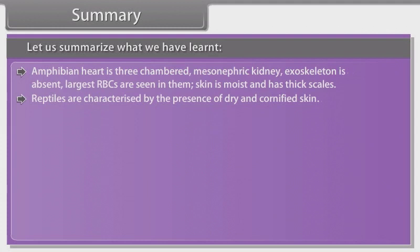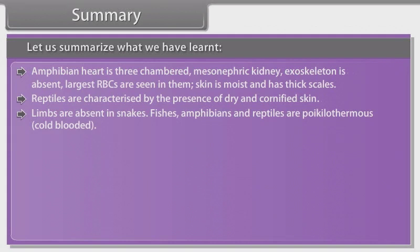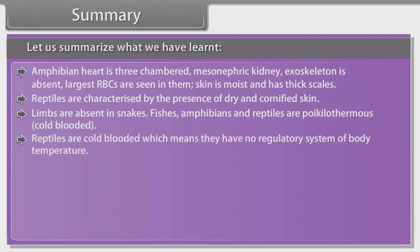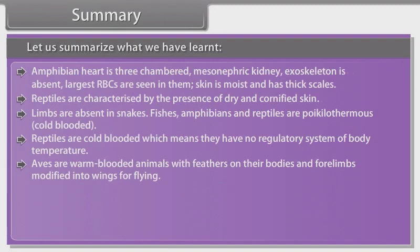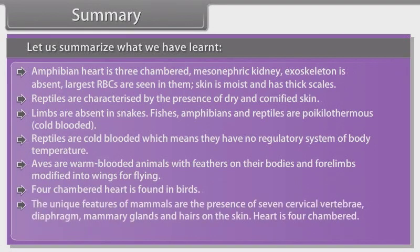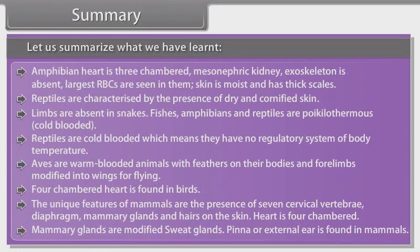Reptiles are characterized by the presence of dry and cornified skin. Limbs are absent in snakes. Fishes, amphibians and reptiles are poikilothermous, i.e., cold-blooded, meaning they have no regulatory system of body temperature. Aves are warm-blooded animals with feathers on their bodies and forelimbs modified into wings for flying. Four-chambered heart is found in birds. The unique features of mammals are the presence of seven cervical vertebrae, diaphragm, mammary glands and hairs on the skin. Heart is four-chambered. Mammary glands are modified sweat glands. Pinna or external ear is found in mammals.